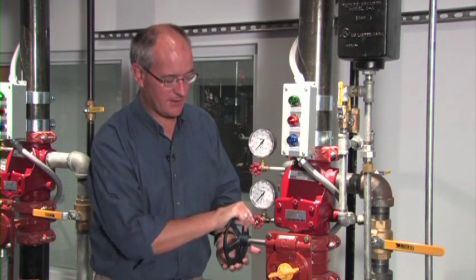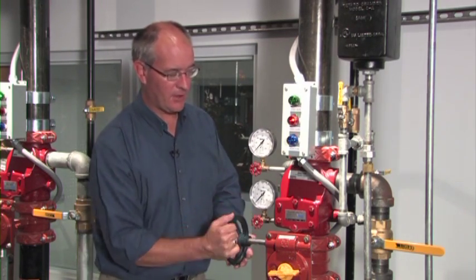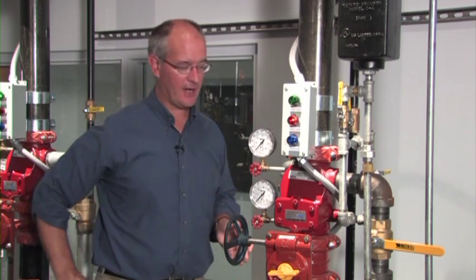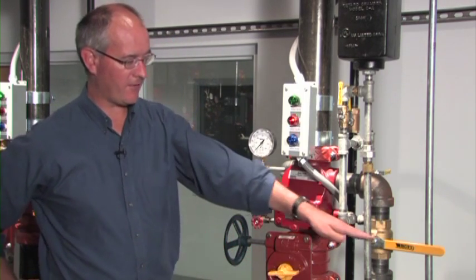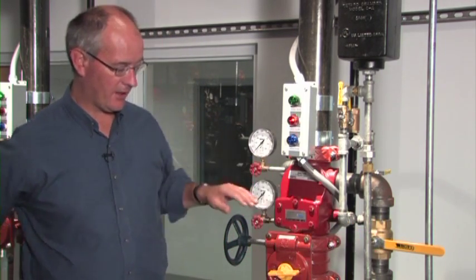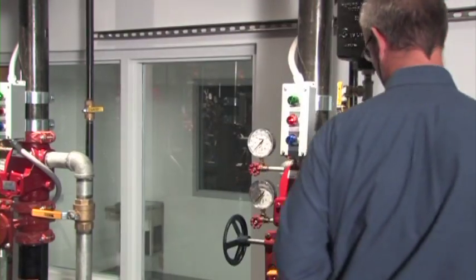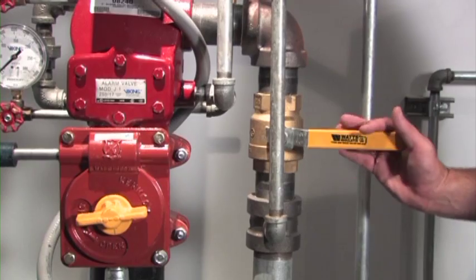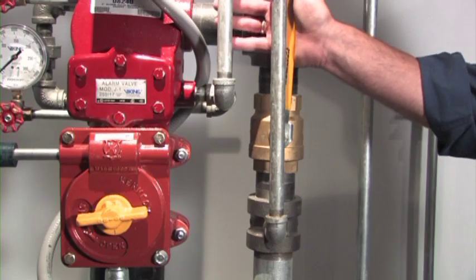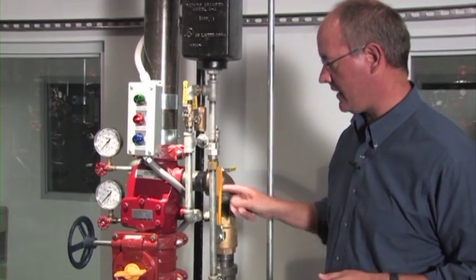Once the water flow is ceased, we need to drain down the riser. The riser is drained through a valve called the main drain. The main drain valve is connected to the valve trim. We simply open the valve to drain down the riser.